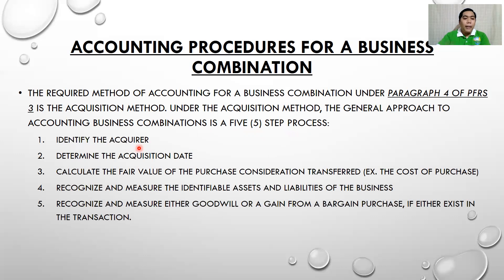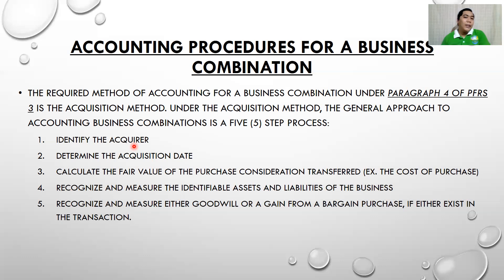In problems or board examinations, it is usually easy to identify the acquirer because the problem tells us who it is. But in the actual accounting process it is very hard — you need to determine as an accountant whether your company is the acquirer or the acquiree. In problems and exercises, it is mostly given. Step two is to determine the acquisition date — we need to analyze and check the dates when the business combination occurred.